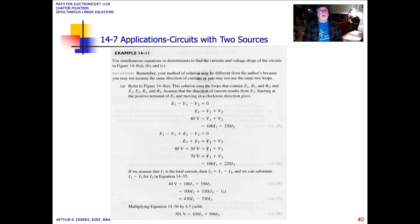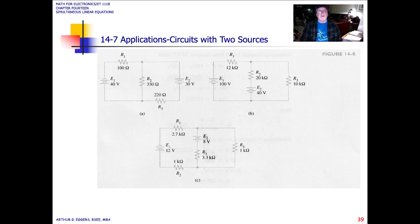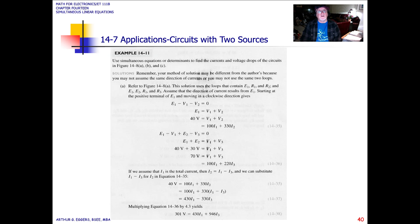So in the example 14-11, we use simultaneous equations or determinants to find the currents and the voltage drops of the circuits in figure 14.8, A, B, and C. So it's asking you to take these apart, do the analysis using substitution and determinants.